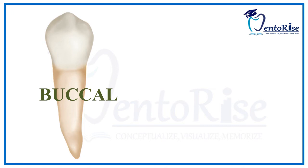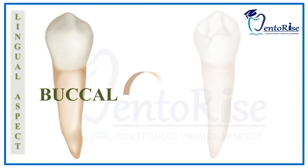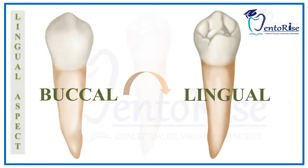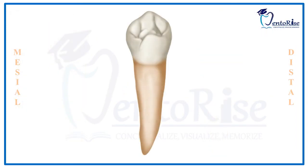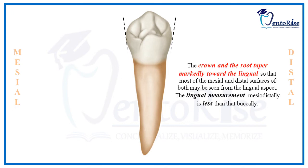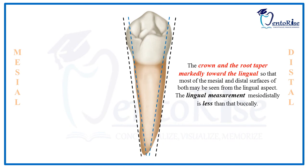Now let's discuss the lingual aspect of the permanent mandibular 1st premolar. Rotating the tooth from the buccal towards the lingual aspect, we observe that the crown and the root taper markedly towards the lingual side, making the mesial and distal surfaces visible from the lingual aspect itself. This implies that the lingual mesodistal measurement is less than the buccal measurement.